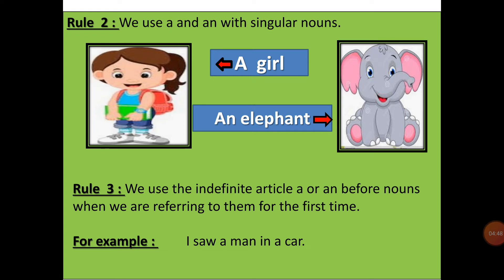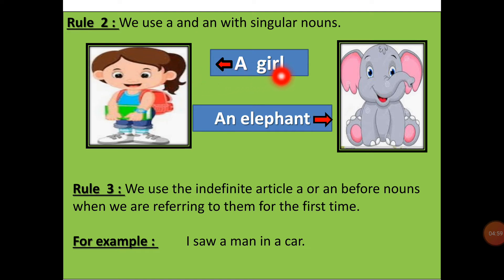Now the second rule: we use a and an with singular nouns, when the noun is one in number. A girl — one girl is there, that's why a girl. An elephant — one elephant, that's why an will come, because the first letter of the word is E.